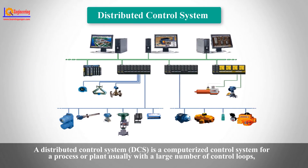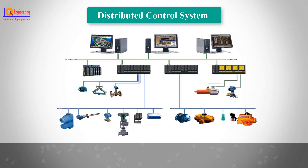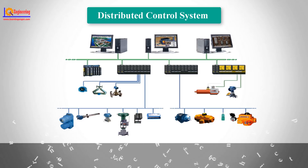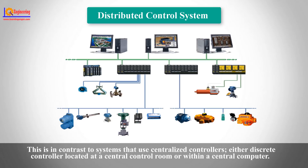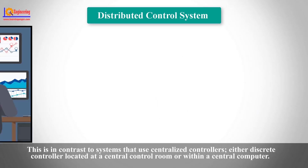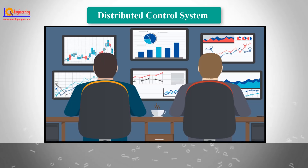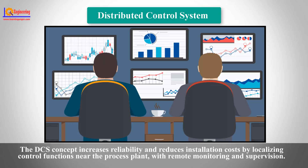A distributed control system is a computerized control system for a process or plant, usually with a large number of control loops, in which autonomous controllers are distributed throughout the system, but there is central operator supervisory control. This is in contrast to systems that use centralized controllers, either discrete controllers located at a central control room or within a central computer. The DCS concept increases reliability and reduces installation cost by localizing control of functions near the process plant with remote monitoring and supervision.